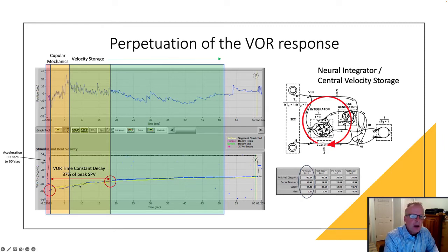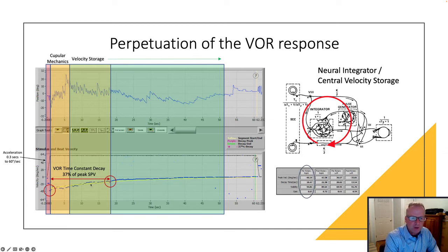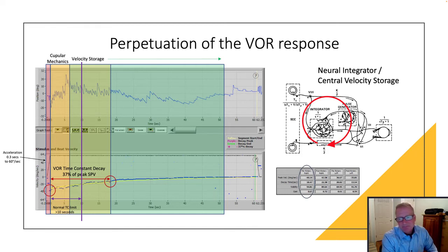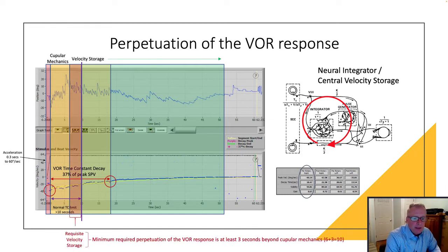How much is the neural integrator working — how much is the velocity storage working in perpetuating that VOR response? The normal limit for the time decay that we look for is about 10 seconds, which means we're only asking the velocity storage mechanism to provide about three more seconds beyond the cupular mechanics.